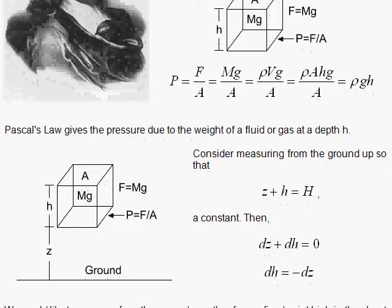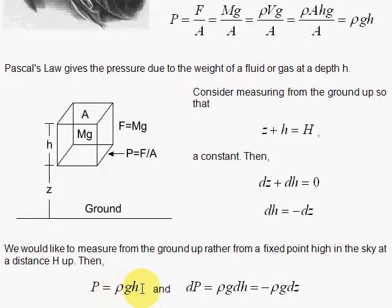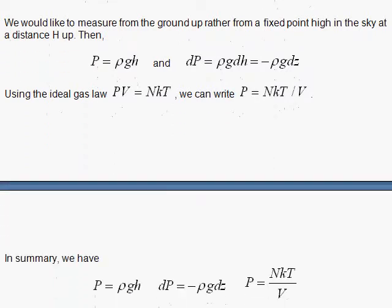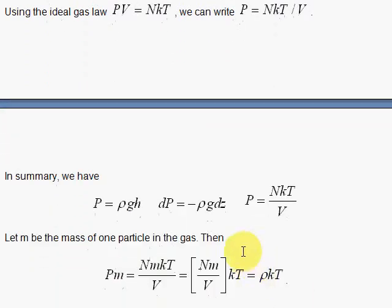So using that, I can then write the pressure is rho GH, and the differential pressure, DP, is rho GDH, where I replace the DH with minus DZ and get that equation, and then I head over to the ideal gas law. And here with the ideal gas law, I divide by V, so PV is NKT, I divide by V, and I notice that I almost have here a density.